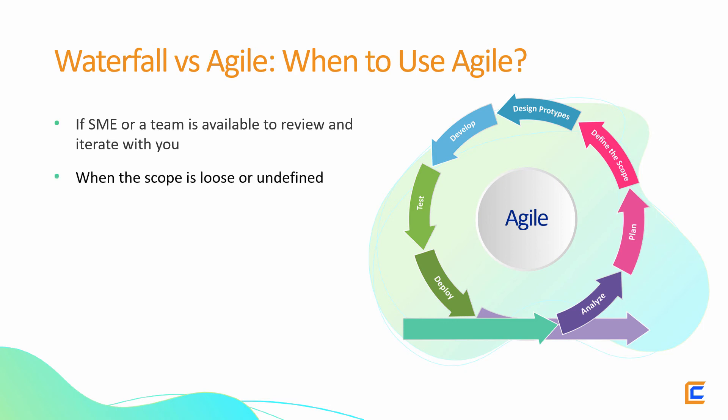When the scope is loose or undefined — as Steve Jobs said, people don't know what they want until you show it to them. So if you are developing a course that sails into the unknown domain of content, technicalities, or innovative interactions, consider going Agile. If you don't have a defined scope at the start of a course, being Agile will give you the freedom to keep checking regularly whether you're developing the course with the right content, design, and interactions.